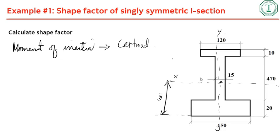To calculate y_bar, you take the moment of each area. Split the cross-section into rectangles — one for the top flange, one for the web, and one for the bottom flange — then take the moment of those areas.